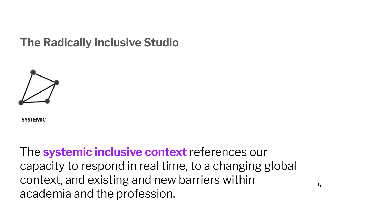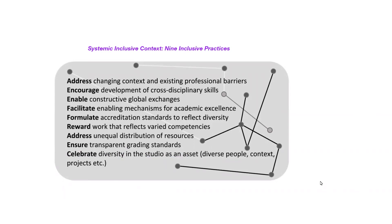The systemic inclusive context references our capacity to respond in real time to a changing global context and existing and new barriers within academia and the profession. Nine inclusive practices are proposed within this context, including the need to reward work that reflects varied competencies, and celebrating diversity within the studio as an asset from each of our contexts.